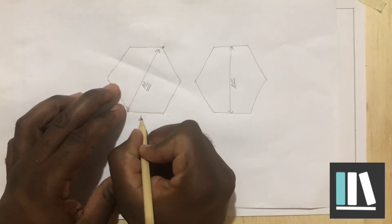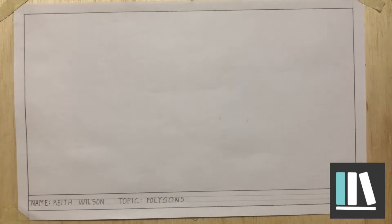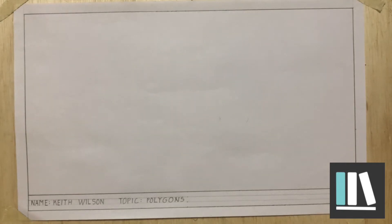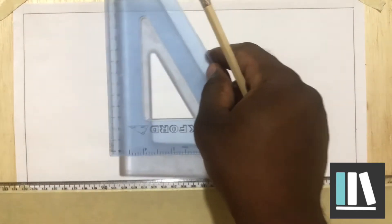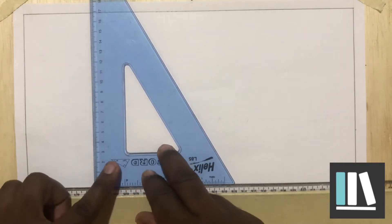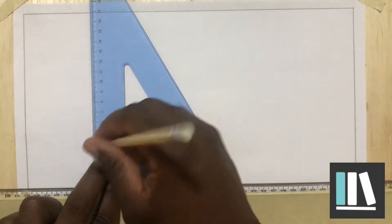I'm going to draw a hexagon where one side will be equal to 40 millimeters, using the across corners method. In this method you draw a circle that is circumscribed around the hexagon — meaning the hexagon is drawn inside the circle with its vertices touching the circle. The first step is to establish the center of the hexagon, which will also be the center of that circle.